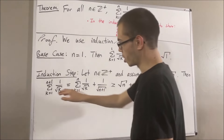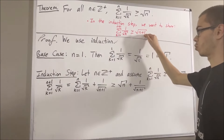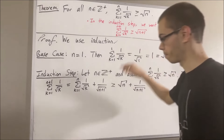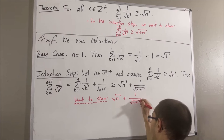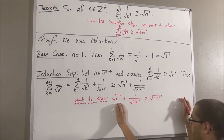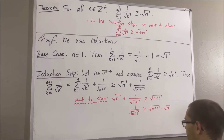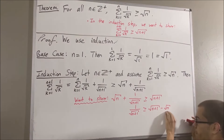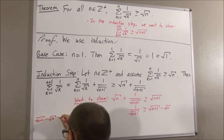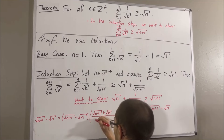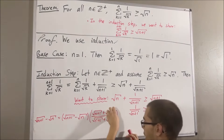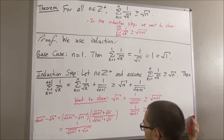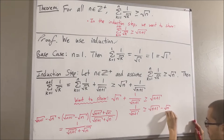Now, remember, the whole goal is to show that this is greater than or equal to the square root of n plus 1. At this point in our proof, we are expecting that the square root of n plus 1 over the square root of n plus 1 is greater than or equal to the square root of n plus 1. If we subtract the square root of n to the other side, this means we're expecting 1 over the square root of n plus 1 to be at least square root of n plus 1 minus square root of n. We can re-express square root of n plus 1 minus square root of n as 1 over the square root of n plus 1 plus the square root of n.